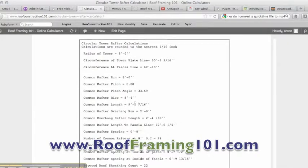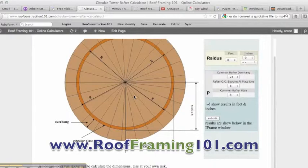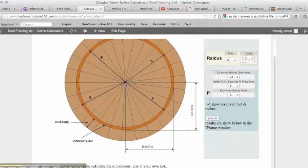Common rafter length, 9 foot 7 and 7/16ths. That measurement again is going to be to the center. And all these rafters are the exact same length without the deductions factored in for the setbacks.